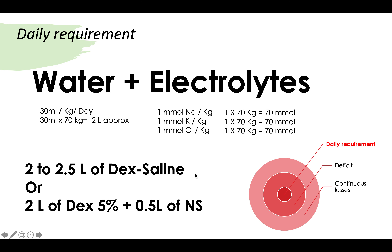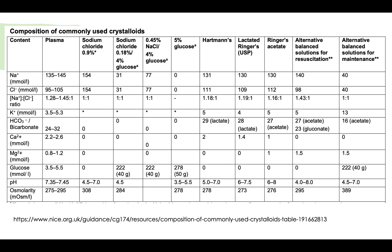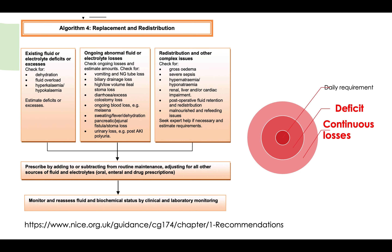As mentioned, you may have bags with 40 millimoles of potassium already added, as labelled on the bag. Or you can give two liters of dextrose 5% plus half a liter of normal saline. This is the maintenance fluid. To summarize: maintenance fluid is either half a liter of sodium chloride plus two liters of dextrose 5% with potassium added, or two to two and a half liters of dextrose saline with potassium added.